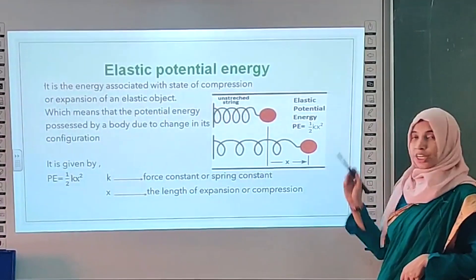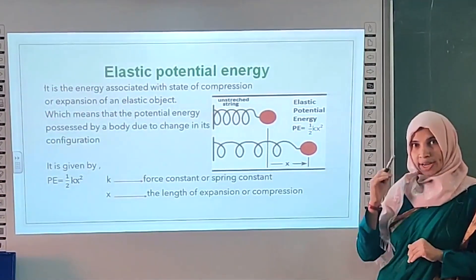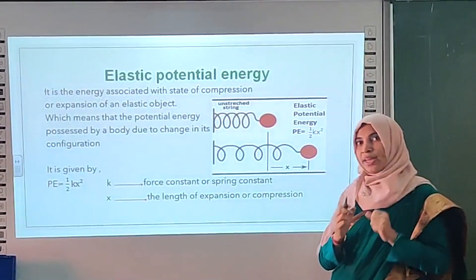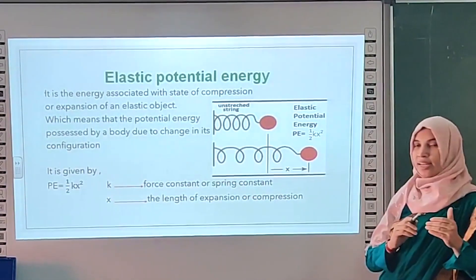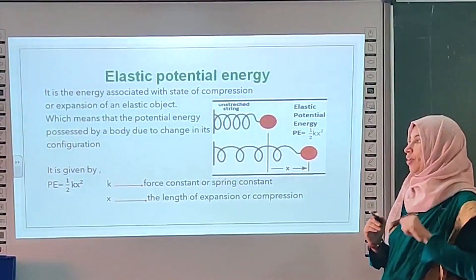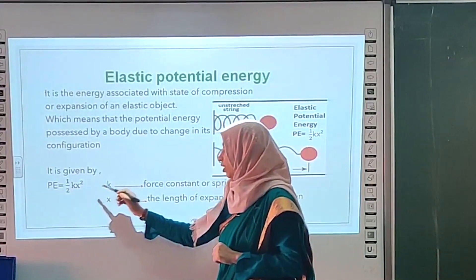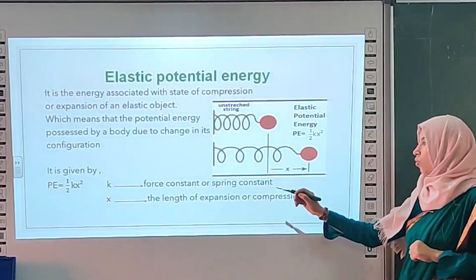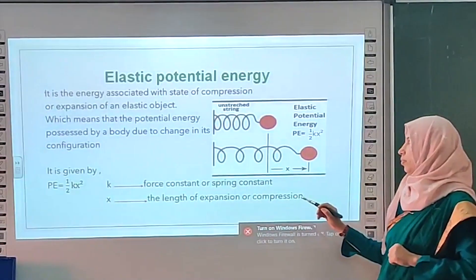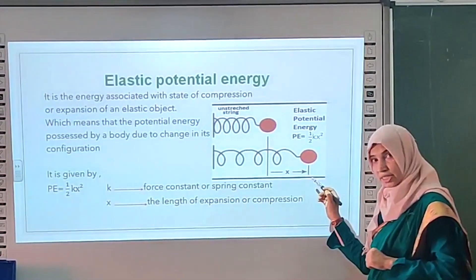Elastic potential energy is the energy associated with the state of compression or expansion of an elastic object. It is the potential energy possessed by a body due to its configuration, and is given by: potential energy equals half into k times x squared, where k is the force constant and x is the length of expansion or compression.